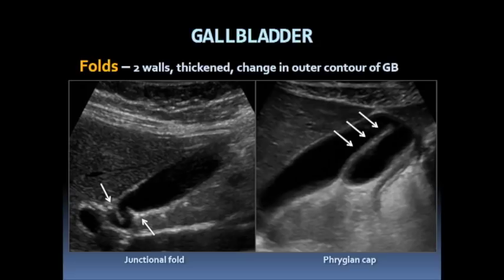When folds occur near the gallbladder neck, they're referred to as junctional folds, and oftentimes we see multiple junctional folds near the gallbladder neck. When gallbladder folds occur near the fundus, they're referred to as phrygian caps. Gallbladder folds are composed of two walls, they're thickened, and they change the outer contour of the gallbladder.